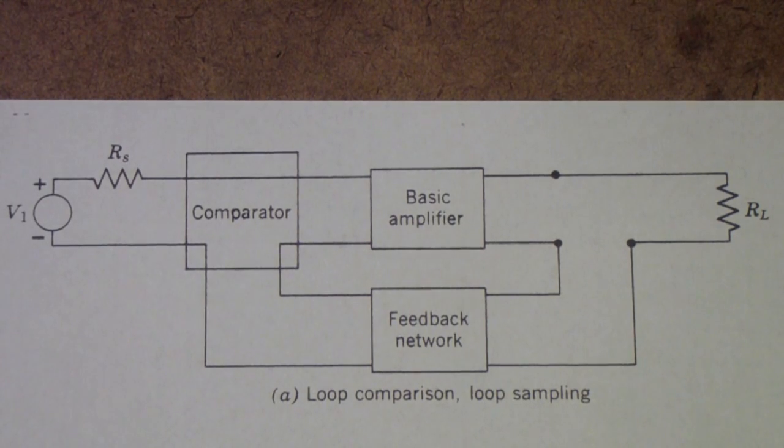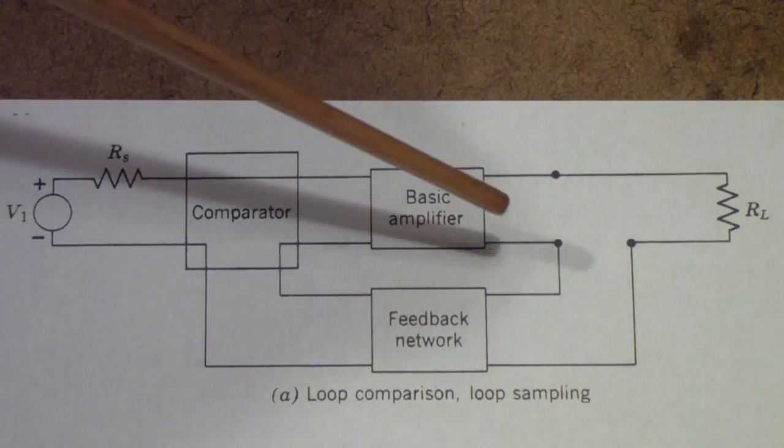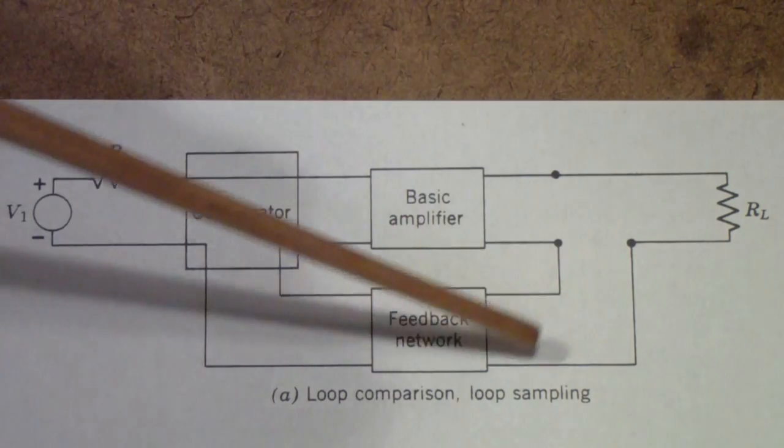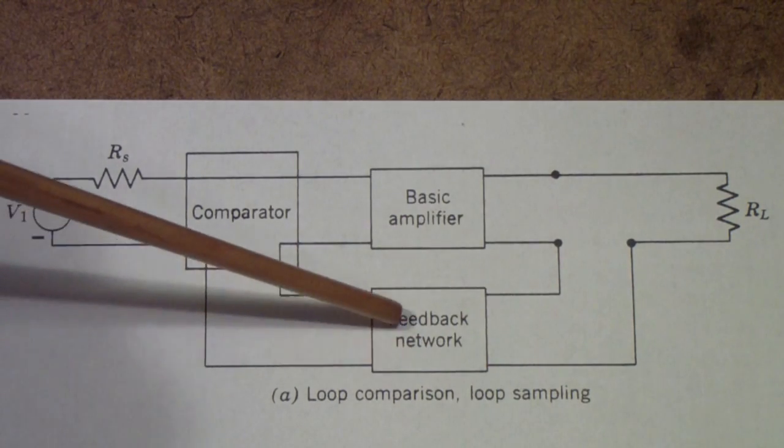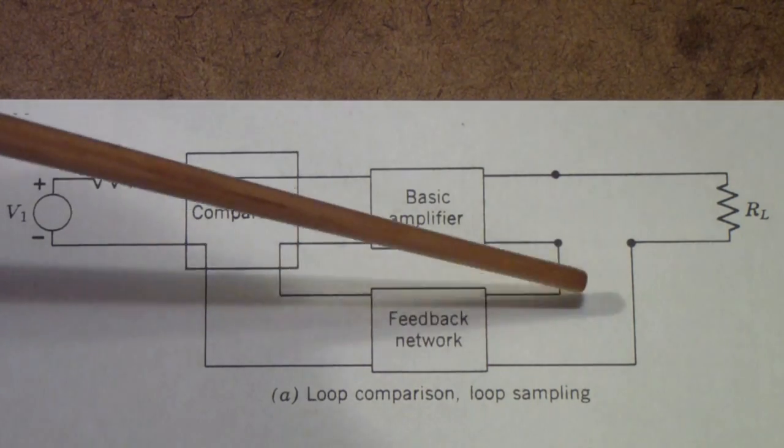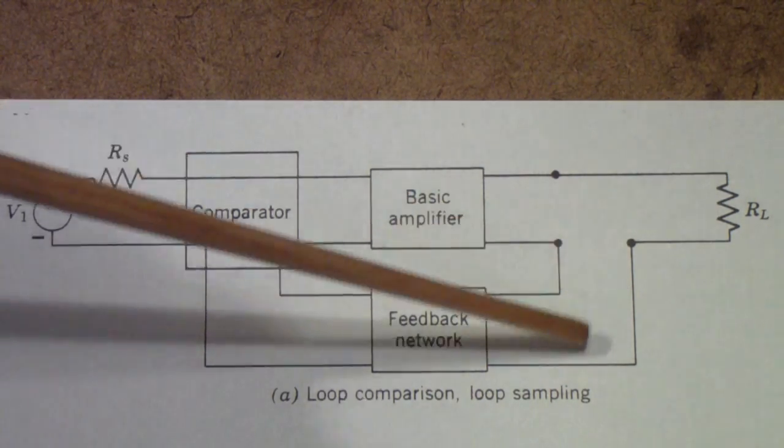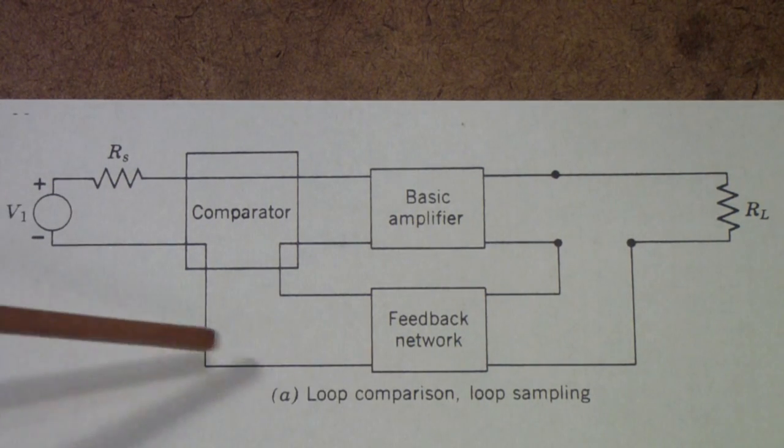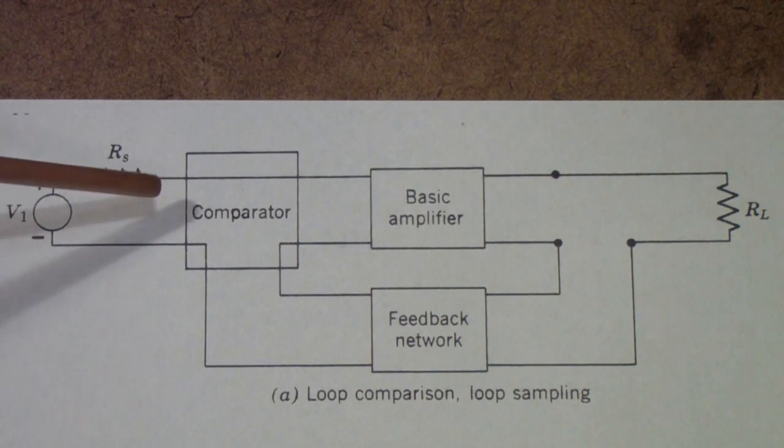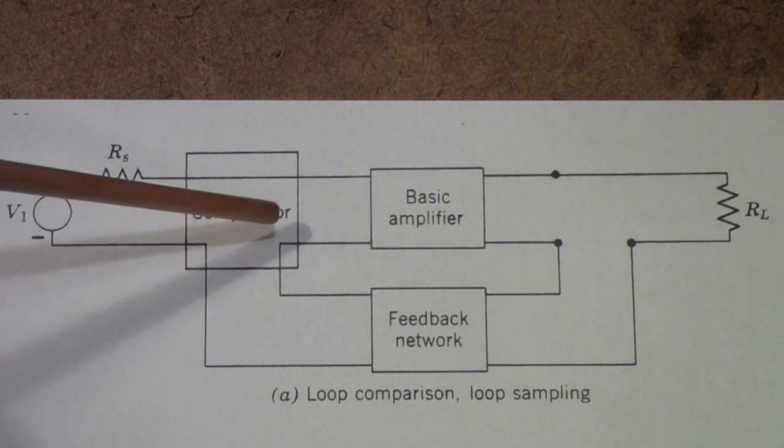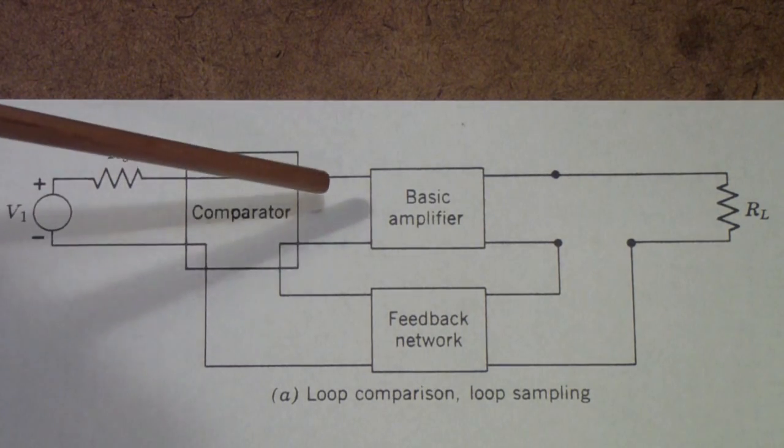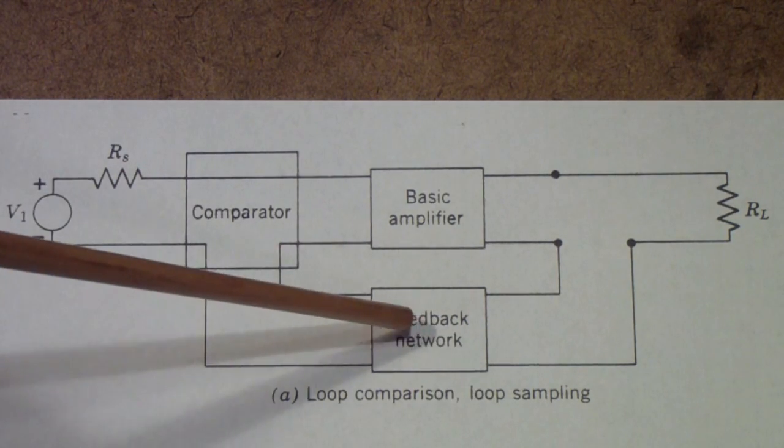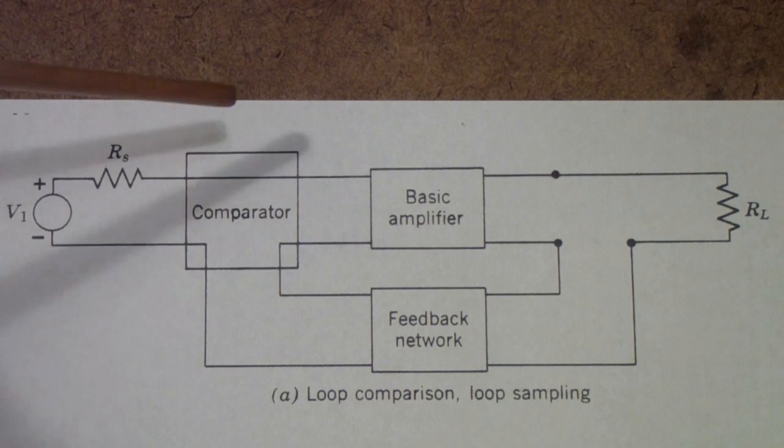Feedback is when you take a portion of the output signal and through some sort of network, you connect that signal back to the input. If you connect it in such a way that this comparator reduces the input signal due to feedback, that's called negative feedback.